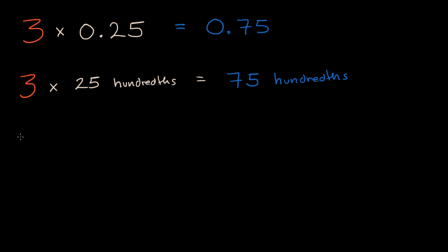is if we were to write 3 times, we could write it as a fraction. We could write 25 over 100. This is another way of writing 25 hundredths. These are all equivalent. So what is 3 times 25 over 100? Well, same idea. This is going to be equal to,